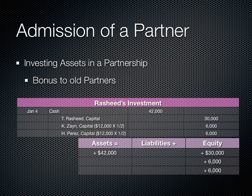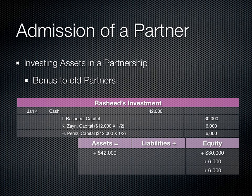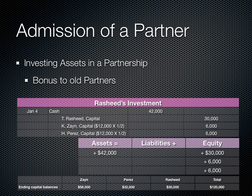Yet another possibility is that Zane and Perez agree to admit Rashid as a 25% partner only if he invests $42,000. The additional funds will add to the capital investment of the two original partners. Rashid's equity is calculated as follows: existing equity of $78,000 plus the new investment of $42,000 equals total partnership equity of $120,000. 25% of $120,000 is $30,000, which is Rashid's portion. On the statement of partners' equity, Zane and Perez's equity each increases by $6,000, giving a total equity of $120,000.